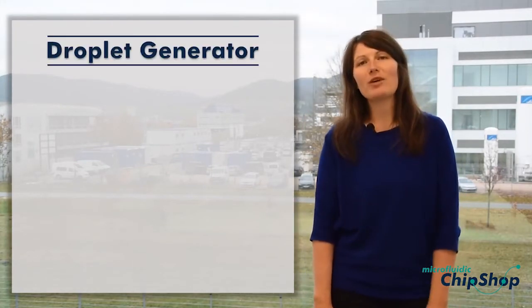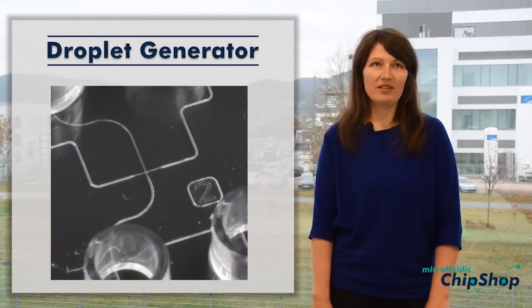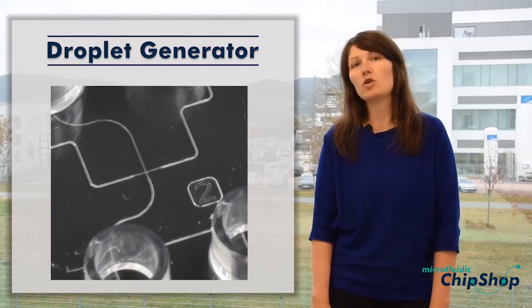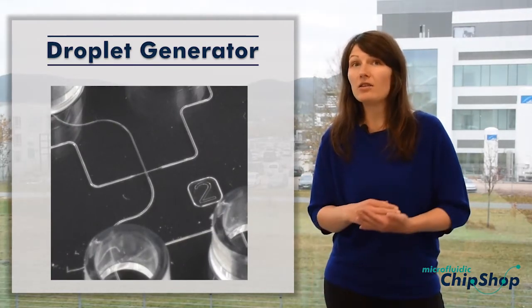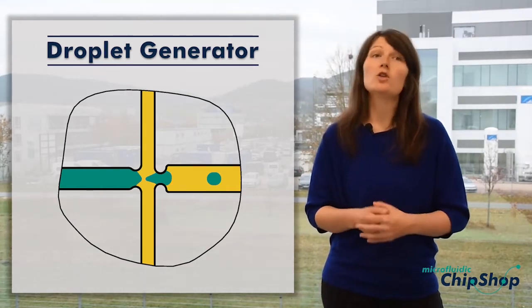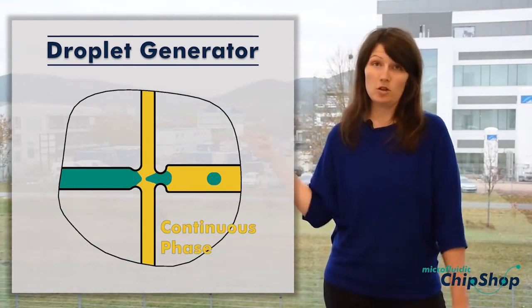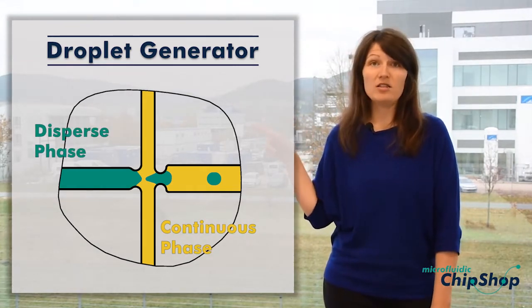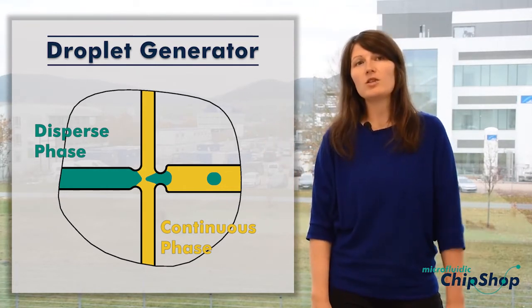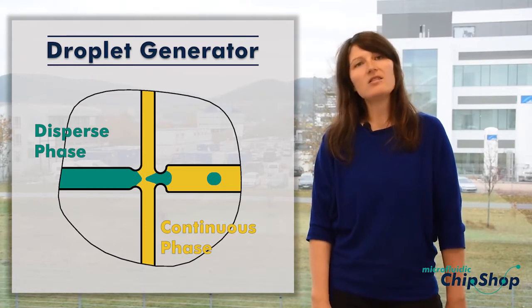A droplet generator is a microfluidic device that possesses a defined microfluidic channel cross design. This design is also called a nozzle, and at the nozzle two immiscible phases will meet: the continuous phase and the dispersed phase.